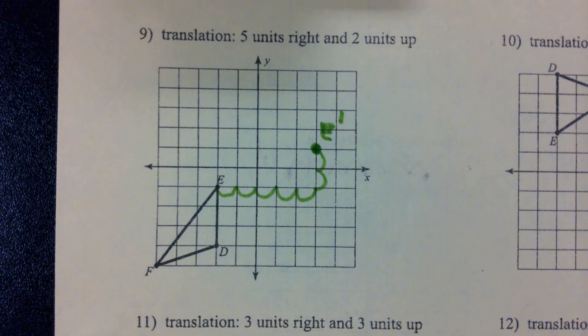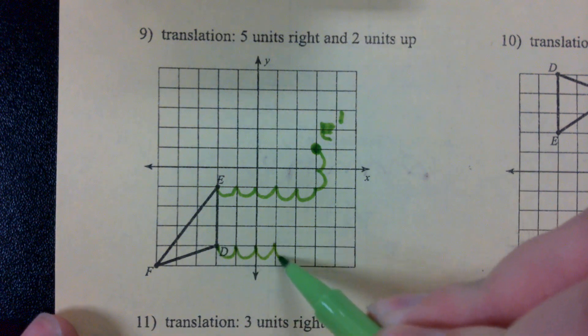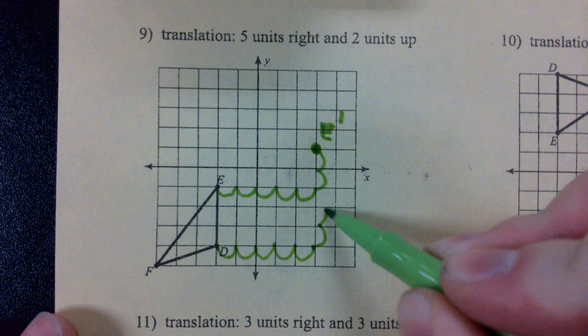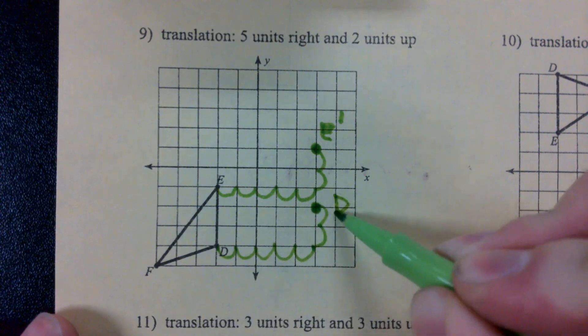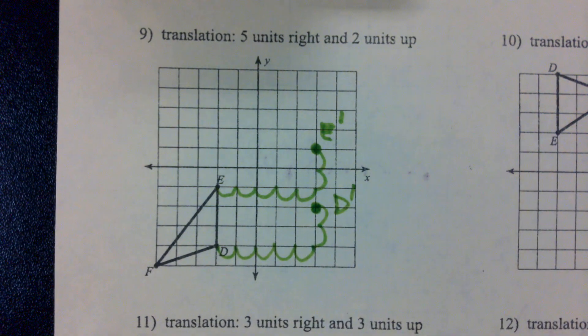5 units to the right. 2 units up. Let's move down to D. 1, 2, 3, 4, 5. 2 units up. 1, 2. D prime is what we're going to call that one.